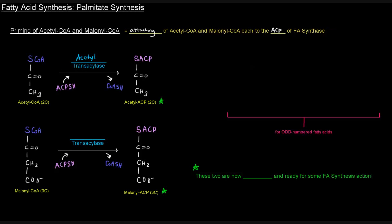It's called acetyl-transacylase because it moves the acyl group — specifically the acetyl group of acetyl-CoA — over to the acyl carrier protein. The same thing happens with malonyl-CoA: the malonyl portion is moved to the ACP, catalyzed by malonyl-transacylase. In the fatty acid synthase video, these were abbreviated AT and MT.